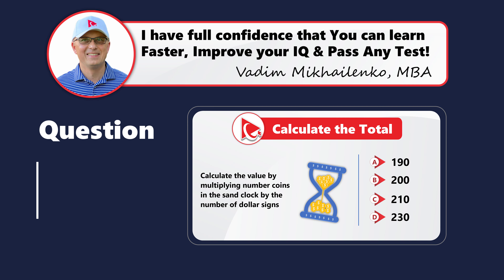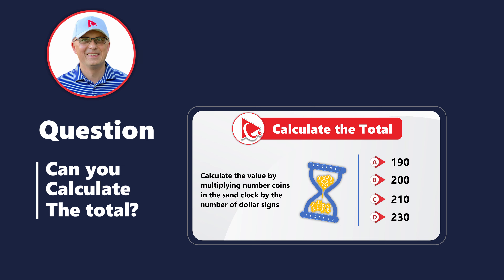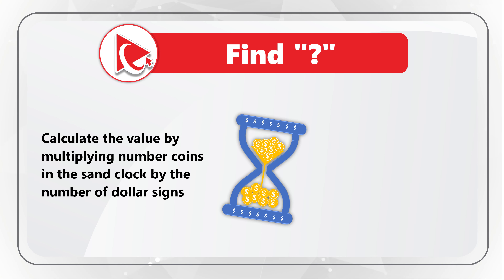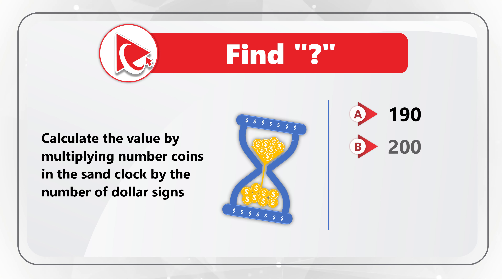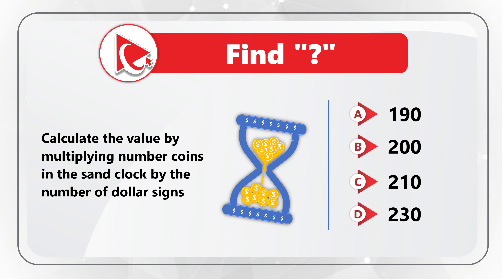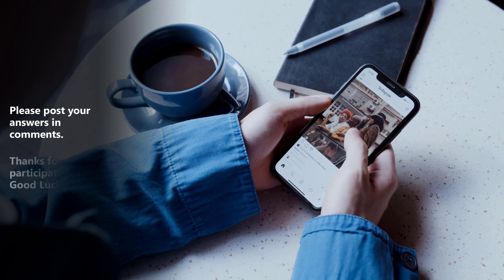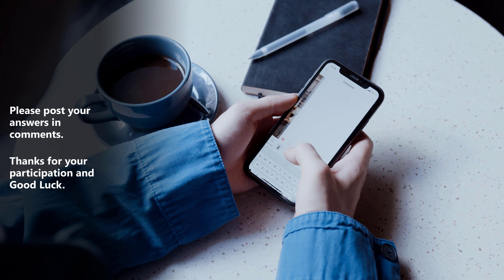Here is a problem to test your business math skills as well as attention to detail. You need to calculate the value by multiplying the number of coins in the same clock by the number of dollar signs. Select from four choices: A is 190, B is 200, C is 210, D is 230. Please post your answer and calculations in comments so I can give you my feedback. Thanks for participating and good luck!